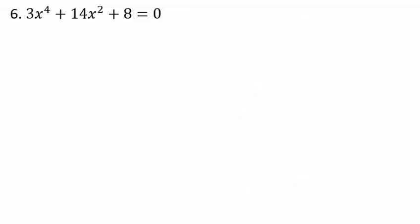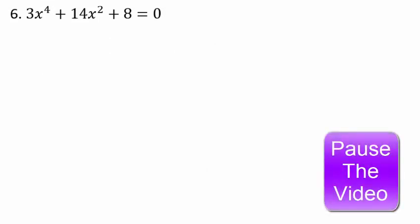Let's do one more example. We have 3x to the fourth plus 14x squared plus 8 equals 0. It's not exactly a quadratic equation, but see if you can figure out what disguised quadratic equation it can be.